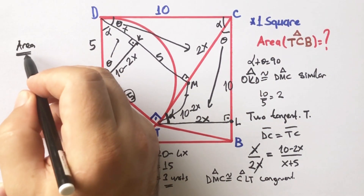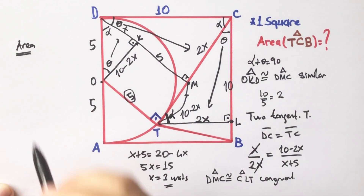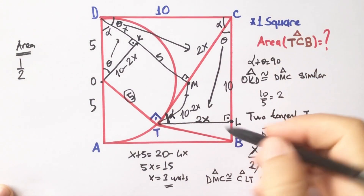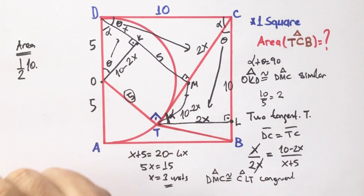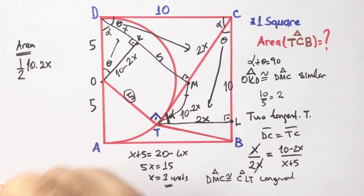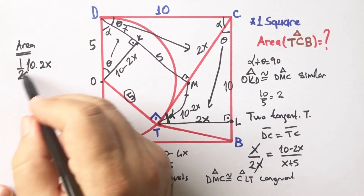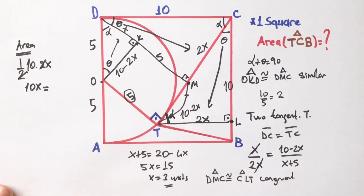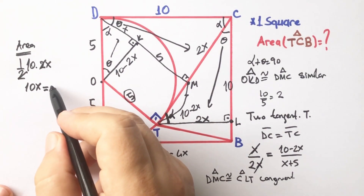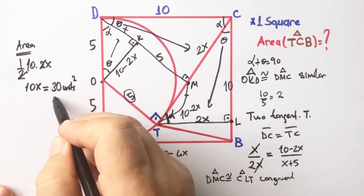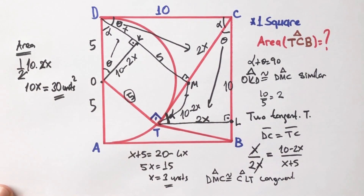Now we have the height and base, so we can calculate the area very easily. The area equals half of the base times the height. So the area equals 10 times x, and since x equals 3, the area equals 30 square units.